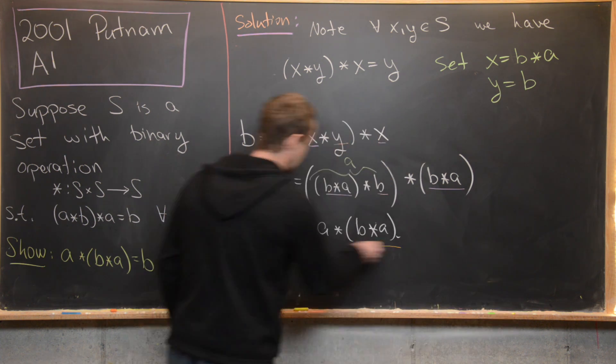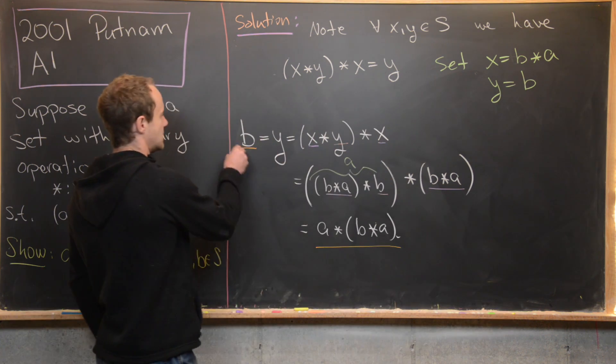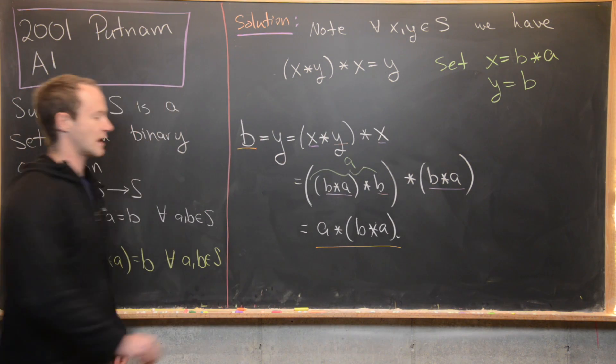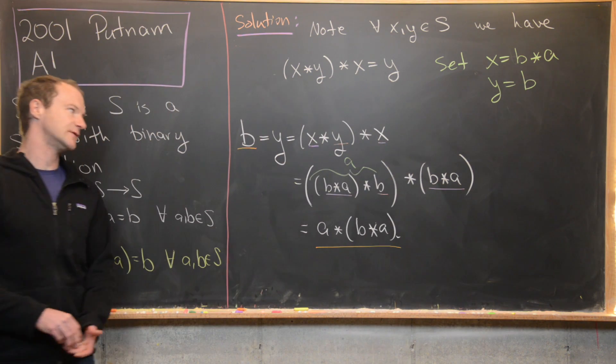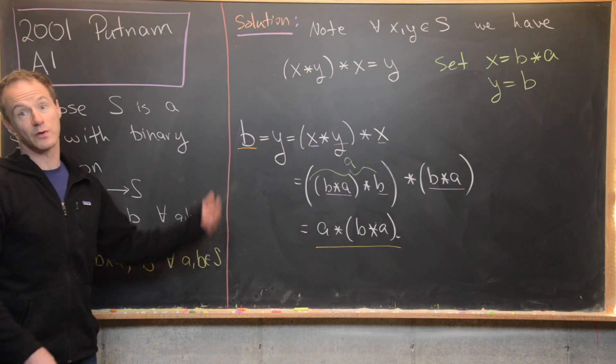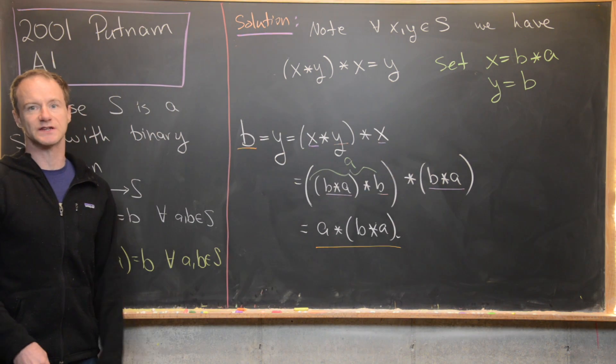Looking at the extreme left and right-hand sides of this equation, we have B = A★(B★A), which is exactly what we wanted to show. That's a good place to stop.